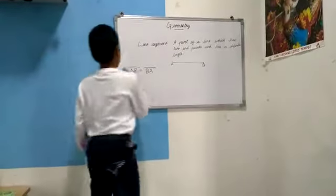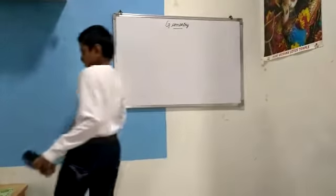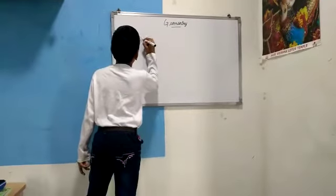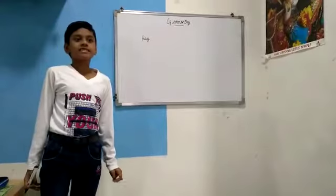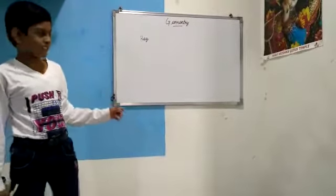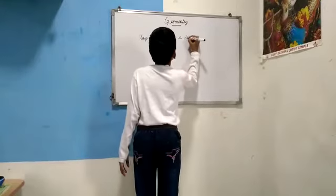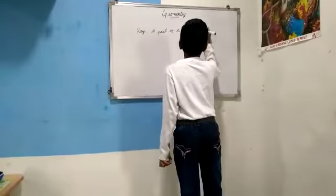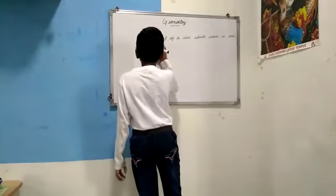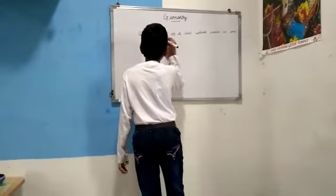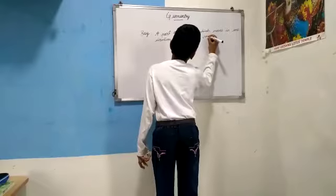Do you understand about line segment? Okay, let's go for next. Next is ray. What is ray? A part of a line which extends only in one direction from a point is called a ray. A part of a line which moves in one direction only from a point is called ray.